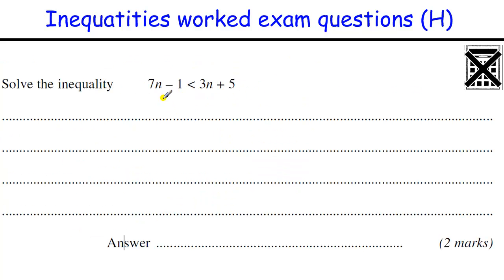Solve this inequality, 7n minus 1 less than 3n plus 5. So take away, you've got n's on both sides, so we take away 3n from both sides, to get 4n minus 1 is less than 5, then we add 1 to both sides, to get 4n is less than 6, then divide by the 4, to get n is less than 6 over 4, which is 1.5, or 1 and a half.